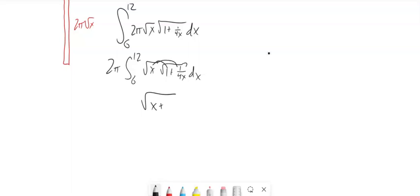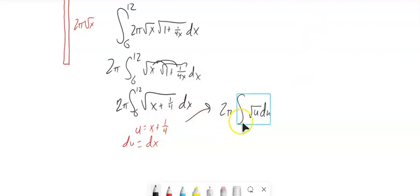So this is the same as the square root of, distribute that x into there, x plus 1/4. And I'll do a little u substitution for this. u equals x plus 1/4, du equals dx. Straight substitution. Nice. Square root of u. And since I pulled these, I do the substitution. 6 plus 1/4 is 25/4. You might do it as a decimal. 12 plus 1/4 is 49/4.